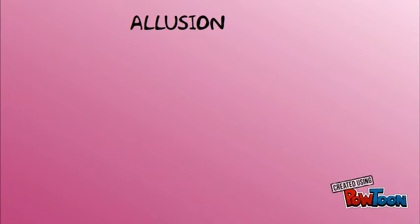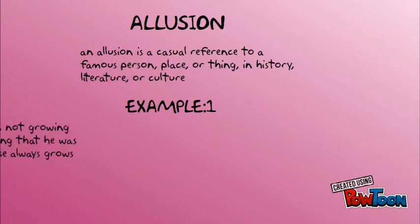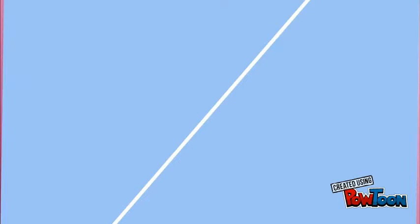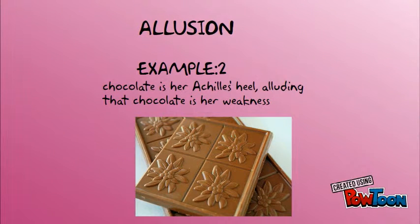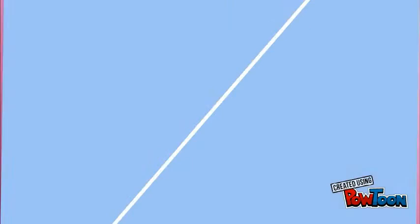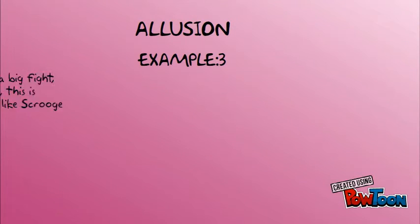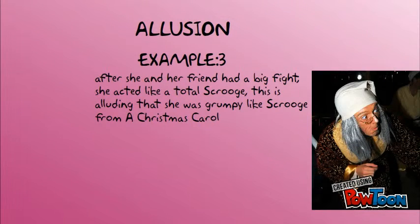An allusion is a casual reference to a famous person, place, or thing in history, literature, or culture. Here are some examples. I was surprised his nose was not growing like Pinocchio's — alluding that he was lying because Pinocchio's nose always grows when he lies. Chocolate is her Achilles heel, alluding that chocolate is her weakness. After she and her friend had a big fight, she acted like a total Scrooge — alluding that she was grumpy like Scrooge from A Christmas Carol.